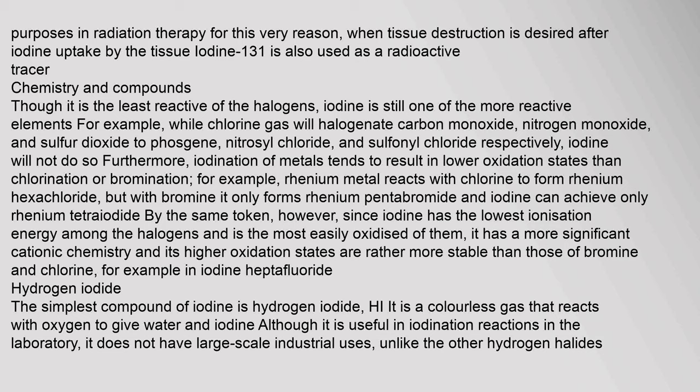Iodination of metals tends to result in lower oxidation states than chlorination or bromination. For example, rhenium metal reacts with chlorine to form rhenium hexachloride, but with bromine it only forms rhenium pentabromide, and iodine can achieve only rhenium tetraiodide. However, since iodine has the lowest ionization energy among the halogens and is the most easily oxidized, it has a more significant cationic chemistry and its higher oxidation states are rather more stable than those of bromine and chlorine.